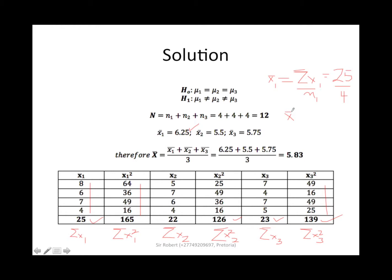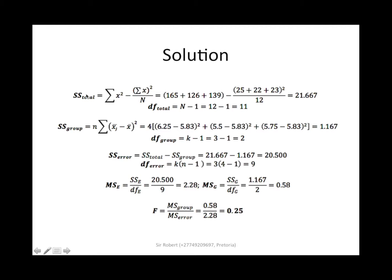Compute x-bar 2 and x-bar 3 in the same way. To get the overall grand mean, add the three group means and divide by 3. The resulting overall grand mean is 5.83.